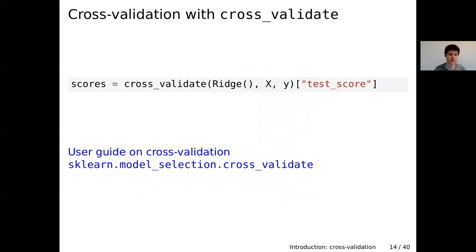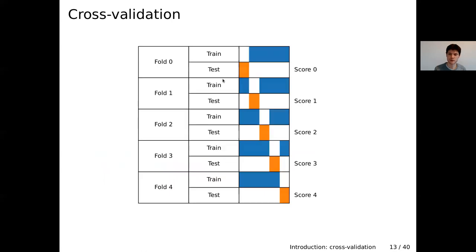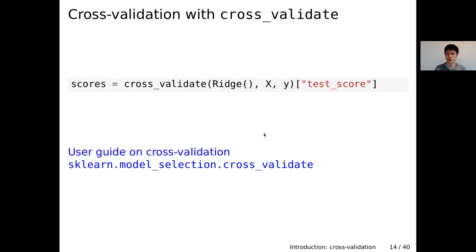This is very easy to do with scikit-learn because it provides the cross_validate function. We provide the unfitted model, our features and targets, and give them to cross_validate. By itself it will select different splits of the data, and for each split fit the model, predict on the testing data, compute the score — giving us a list of scores for the different folds.